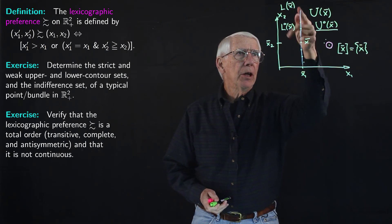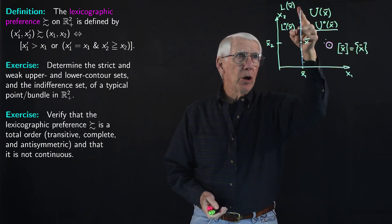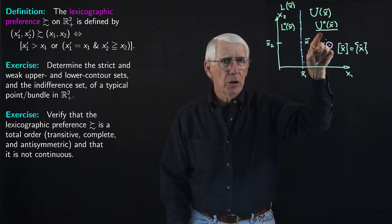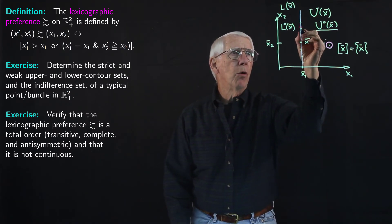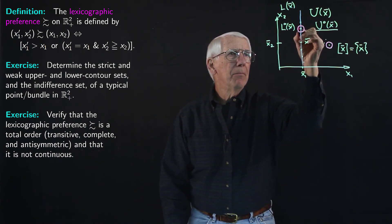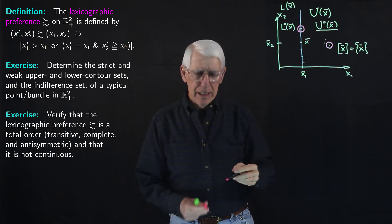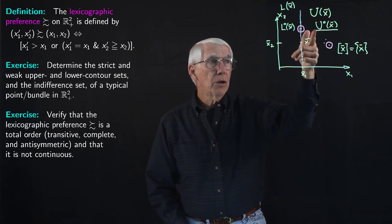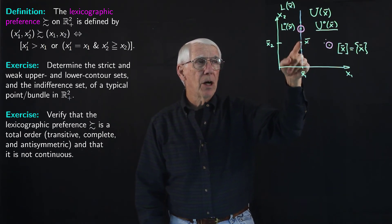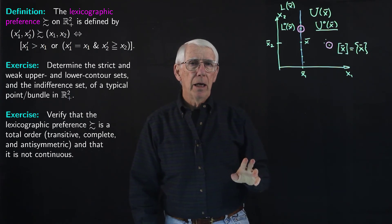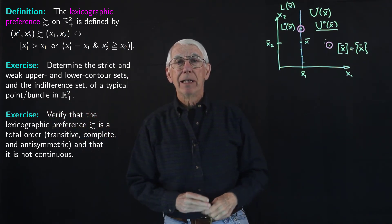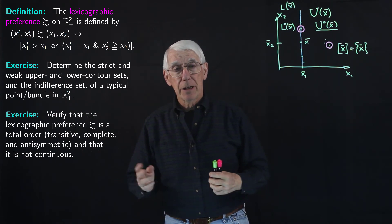What about the points on the blue line above X-bar? Those points are all in the strict upper contour set U-circle. But if we take any one of those points, any open ball around that point is going to contain points that are not in the strict upper contour set — not in U-circle. So that tells us immediately that U-circle, the strict upper contour set of X-bar, is not an open set. And that tells us immediately that the lexicographic preference is not continuous. It's a pre-order, but not a continuous pre-order.